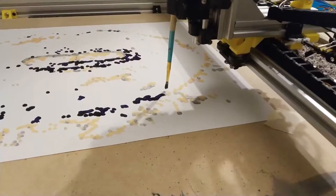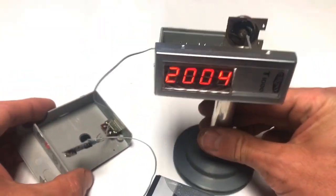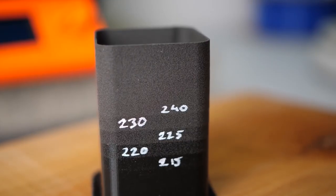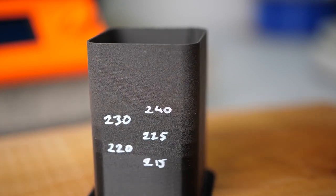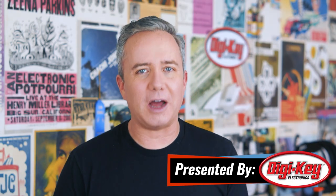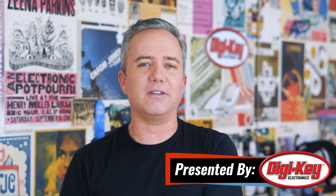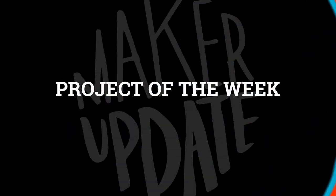This week on Maker Update: a plotter painter, a vintage camera flash clock, a rotary cell phone, a breadboard bender, and foaming filament. Hey, I'm Donald Bell, and welcome back to another Maker Update. I missed you all last week. I hope you're doing great. I have a lot to catch you up on, so let's get started with the project of the week.